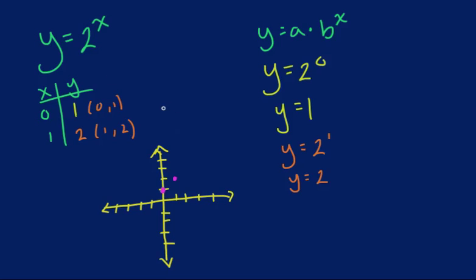The great thing about this is we have something called an asymptote. The asymptote basically means the graph will always get close to something but never actually reach it. In this case, it's 0. You can click the link below for more detail on that. As you can see, this graph will always get close to 0 but never touch it, and then it continues to rise up.